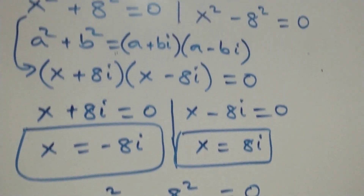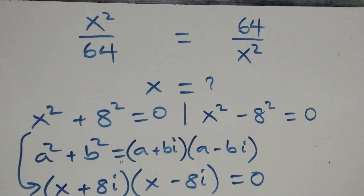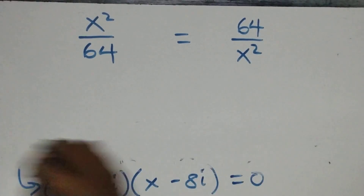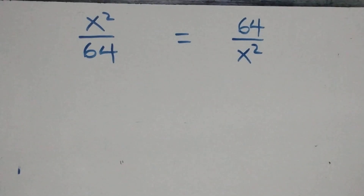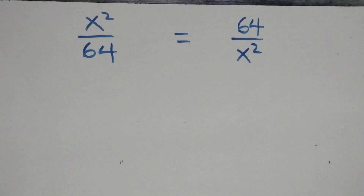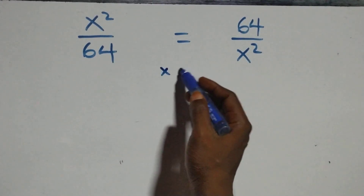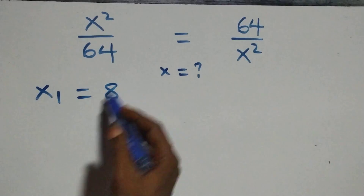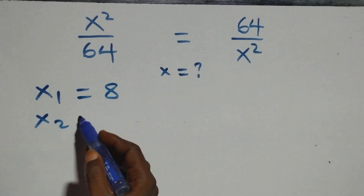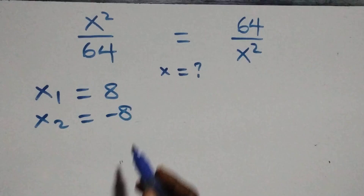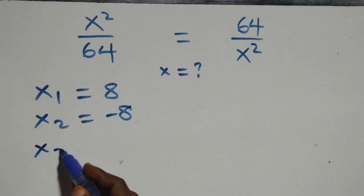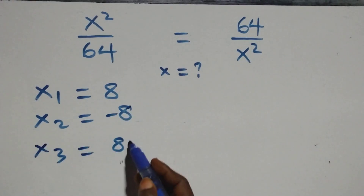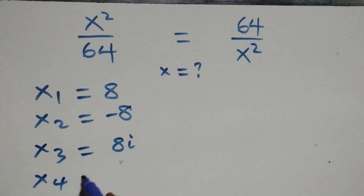Altogether we have four solutions — two real and two complex. Writing them out: x₁ equals 8, x₂ equals minus 8 (the two real solutions), x₃ equals 8i, and x₄ equals minus 8i (the two complex solutions).